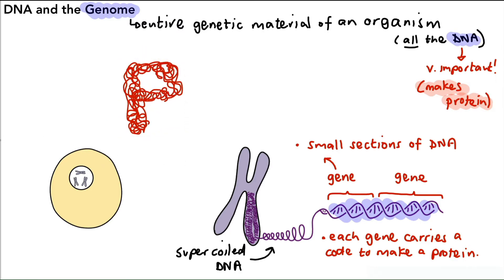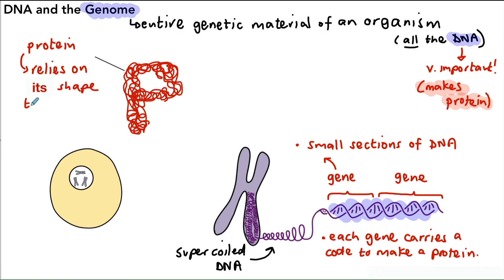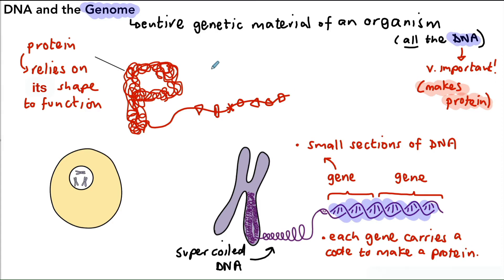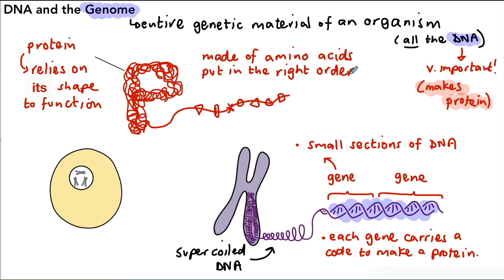Looking more closely at protein, proteins rely very much on their shape — the shape has to be correct for them to be able to do their job within cells. If the shape is incorrect, it won't be able to do its job properly, which could cause problems for the cell, tissue, and the whole organism. Proteins are made of chains of individual units called amino acids — there are about 20 different ones. Those amino acids join up to make chains, which are folded into particular shapes, and getting those amino acids in the right order is really, really important.